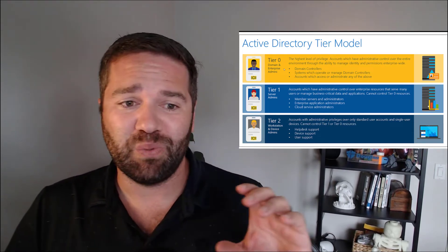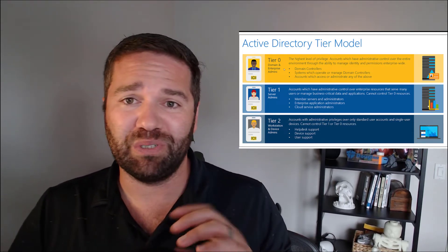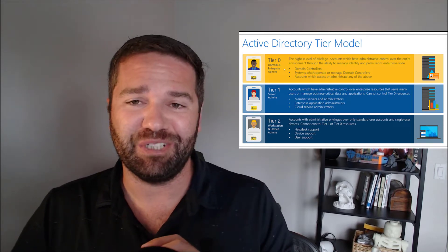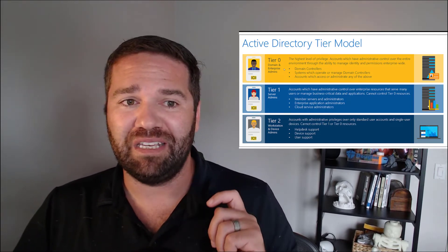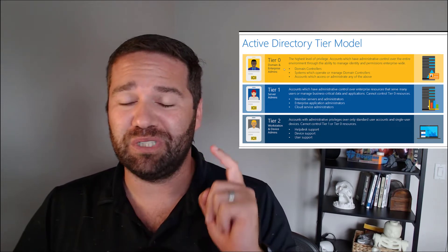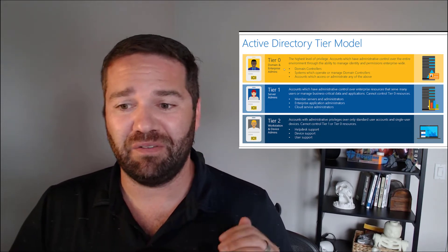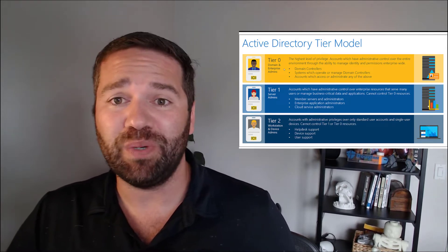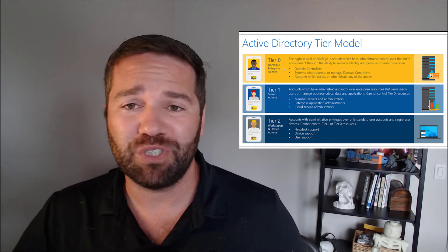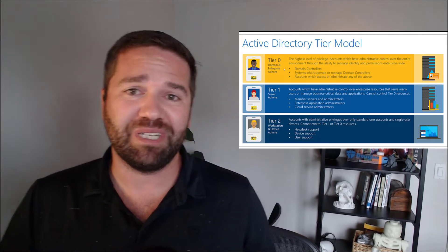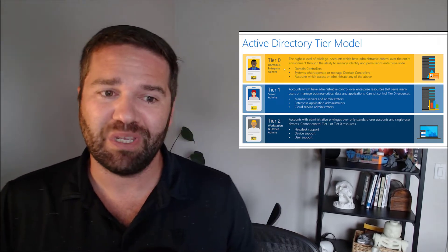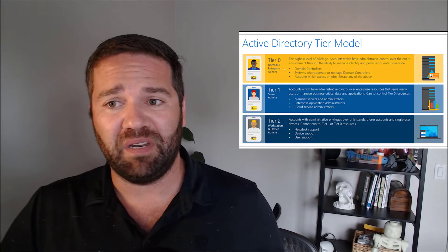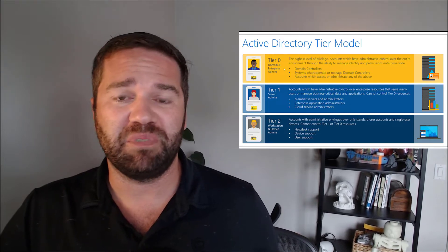For tier two, that would be workstations and things of that nature. So if you were logging into your domain controllers, you would use your tier zero account. If you were logging in to fix a problem with a workstation, you would use that tier two account. And then finally, for checking emails, researching issues, you would use your standard user account. That was a very common set of policies.